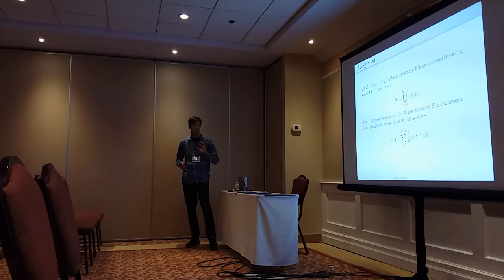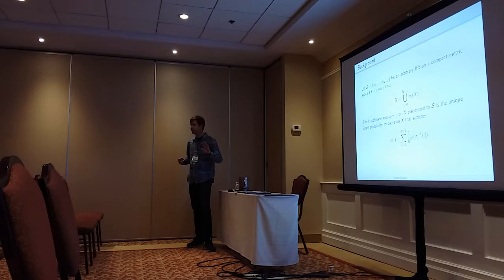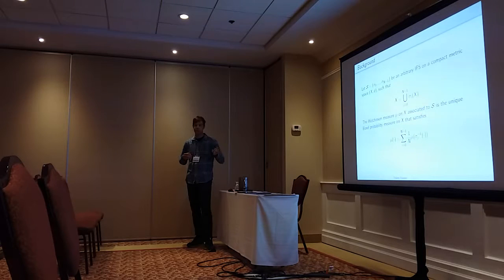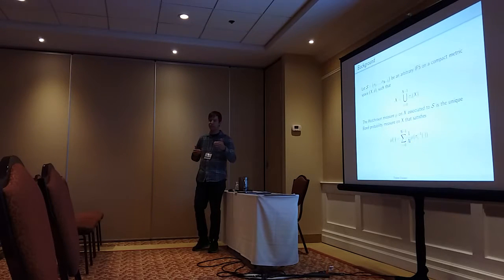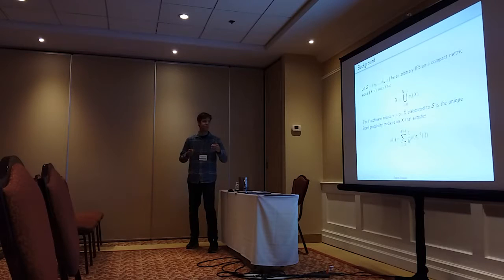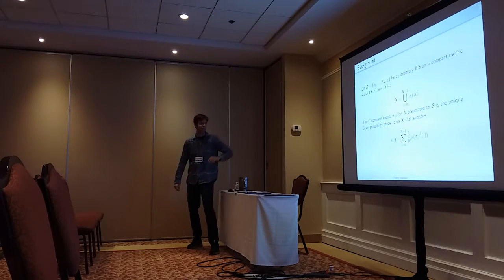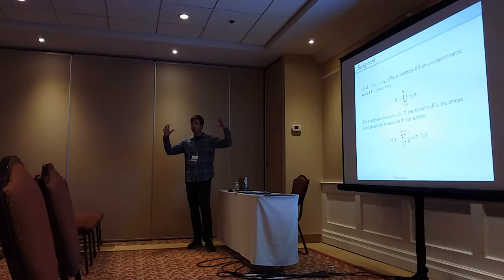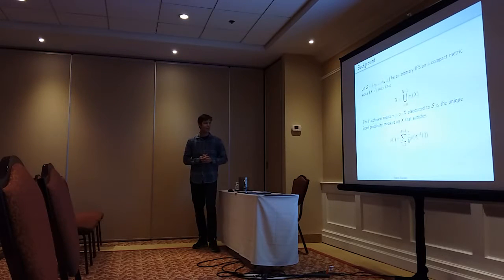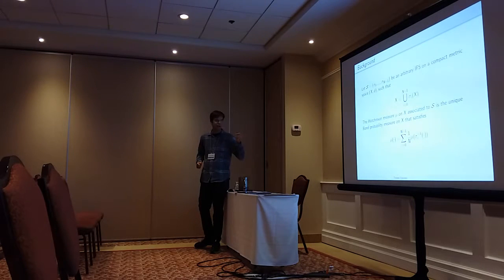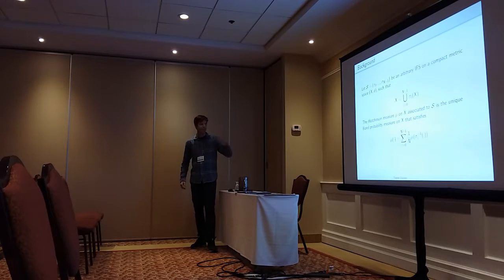Now I want to look at an arbitrary IFS, sigma 0 through sigma n minus 1 — the same number of elements — on a compact metric space. I'm cutting to the chase and saying that (X, d) is the fractal set, so x equals the union of sigma_i of x. You can start with your ambient metric space and restrict to your attractor set eventually; I'm just doing that to start. The Hutchinson measure on x associated to the IFS I'll call mu.